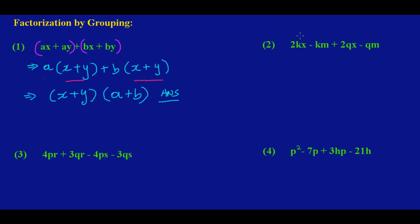Let's look at another example. In this case we have 2KX minus KM plus 2QX minus QM. Again, I'm going to take out what is common to each pair of terms. I'll pair up the first two terms and group the last two terms.